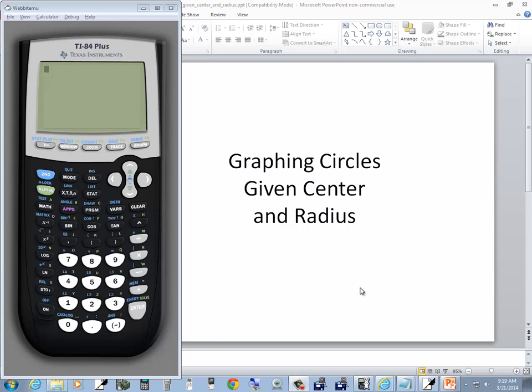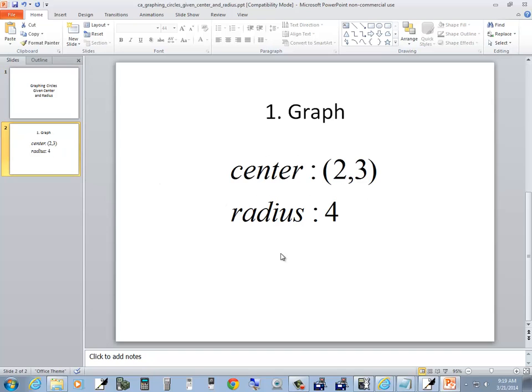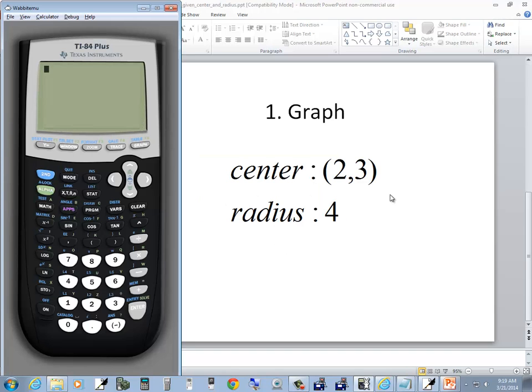Let's take a look at graphing circles given the center and the radius. I've got this problem: center is 2, 3, and radius is 4.